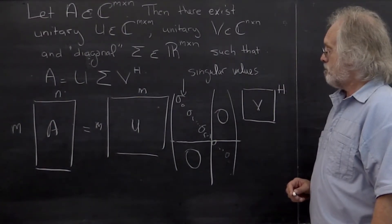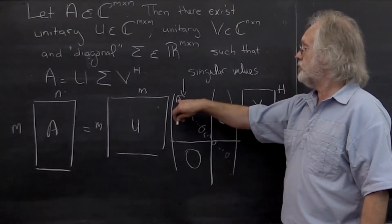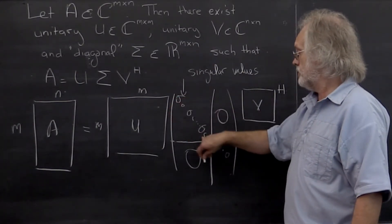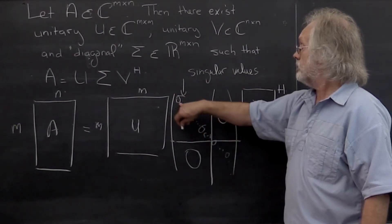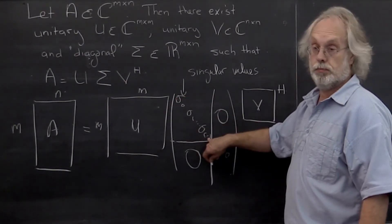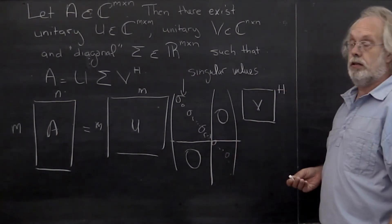And we're going to assume always that the singular values are ordered from largest to smallest. They're all positive, they're ordered from largest to smallest. And that's the singular value decomposition.